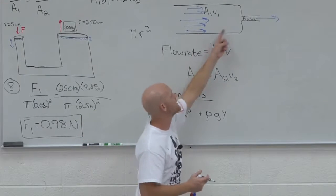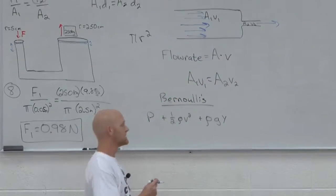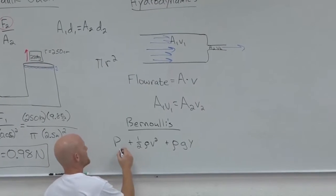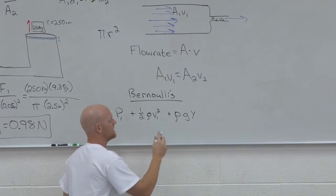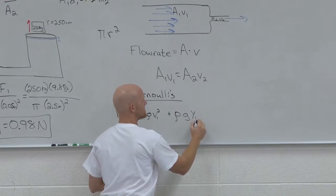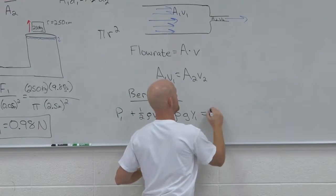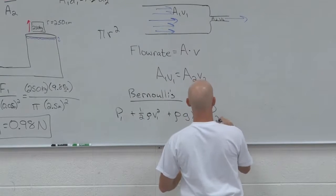And so again, if I'm in two parts of a pipe again, let's say, in some way, shape, or form, that would say that the pressure in area 1, the kinetic energy term in area 1, and the potential energy term in area 1, would equal the same summation in area 2.